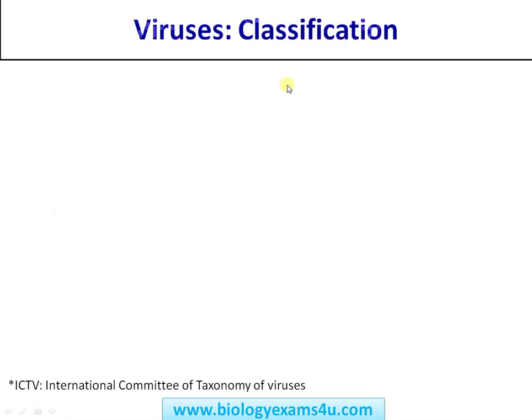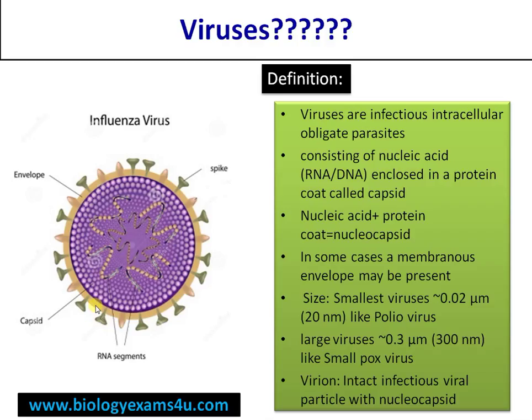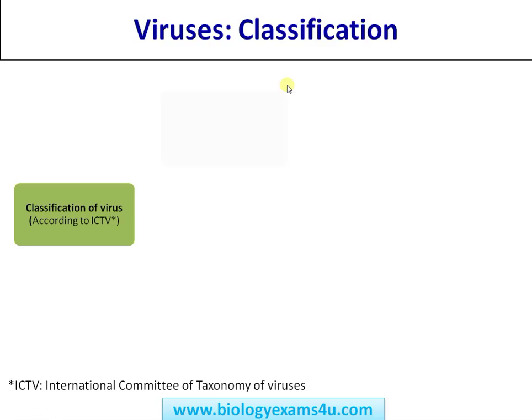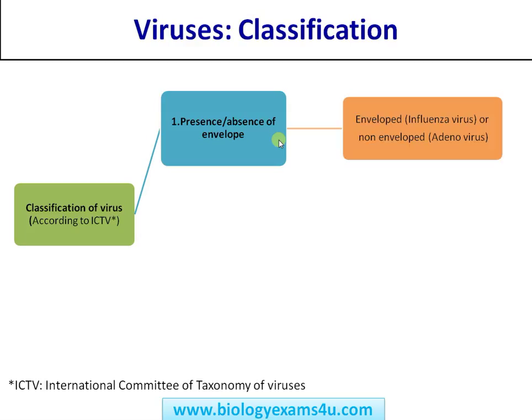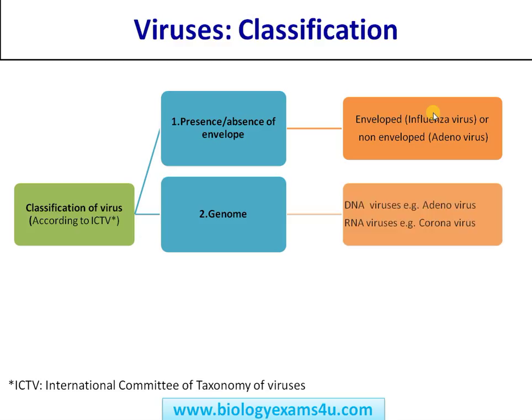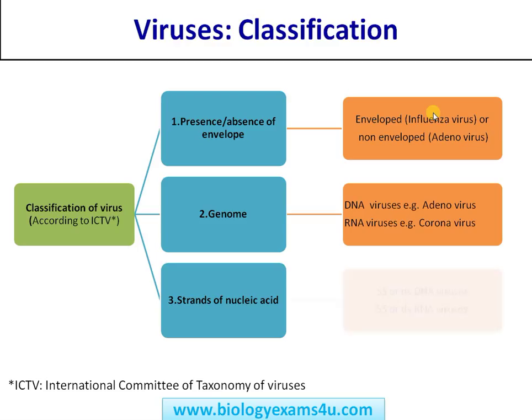Classification of viruses: viruses are classified based on the presence or absence of an envelope as enveloped and non-enveloped viruses. Enveloped viruses include influenza virus and HIV, whereas non-enveloped viruses include adenovirus. Based on genome, they are classified as DNA viruses and RNA viruses. Based on strands of nucleic acid, they are further divided into single-stranded or double-stranded DNA viruses, and also single-stranded or double-stranded RNA viruses.